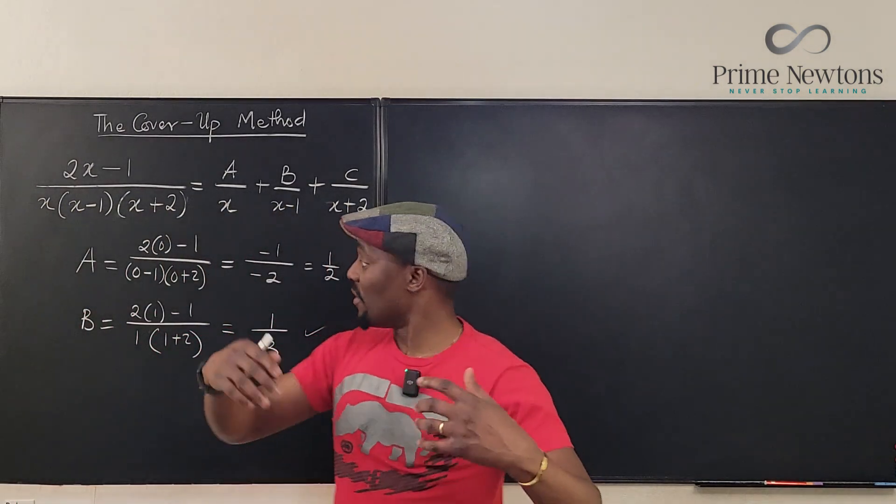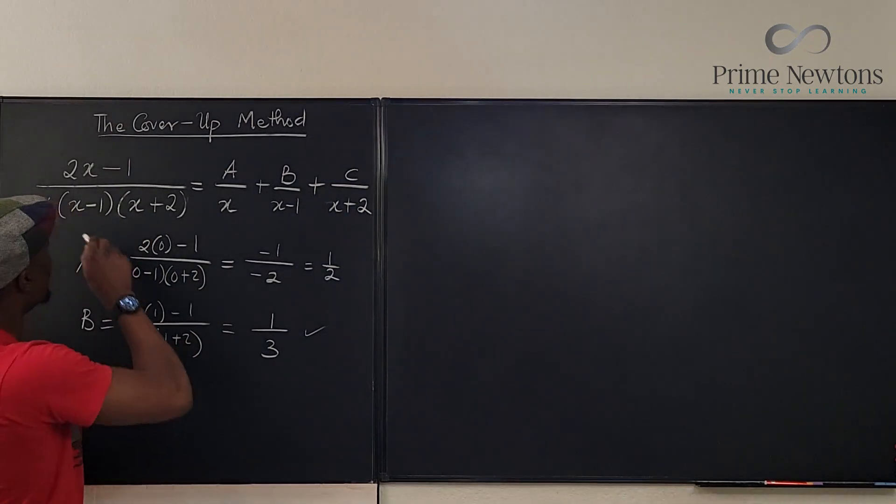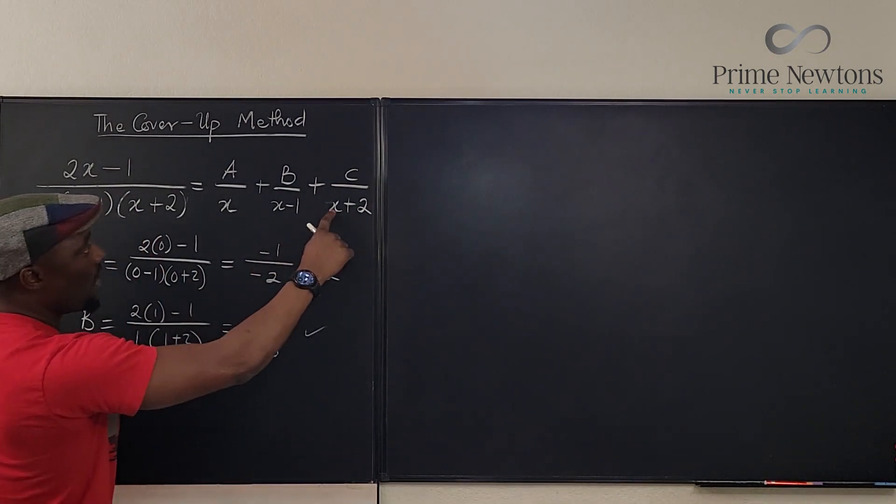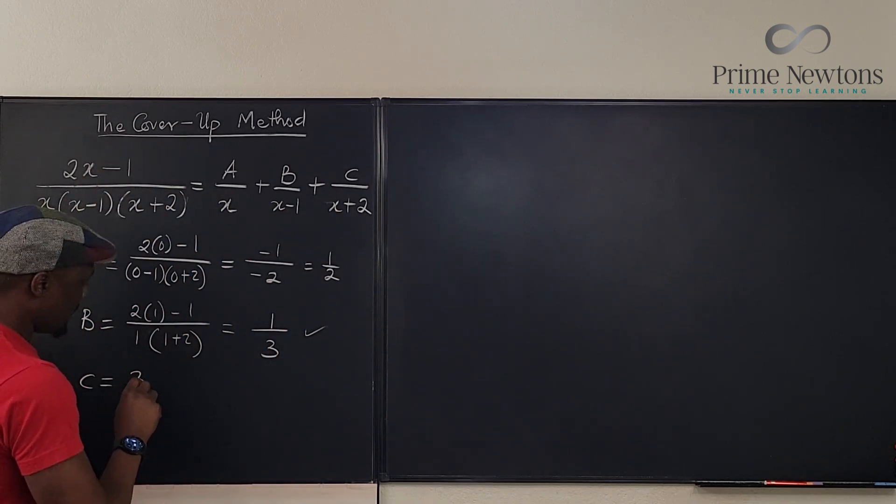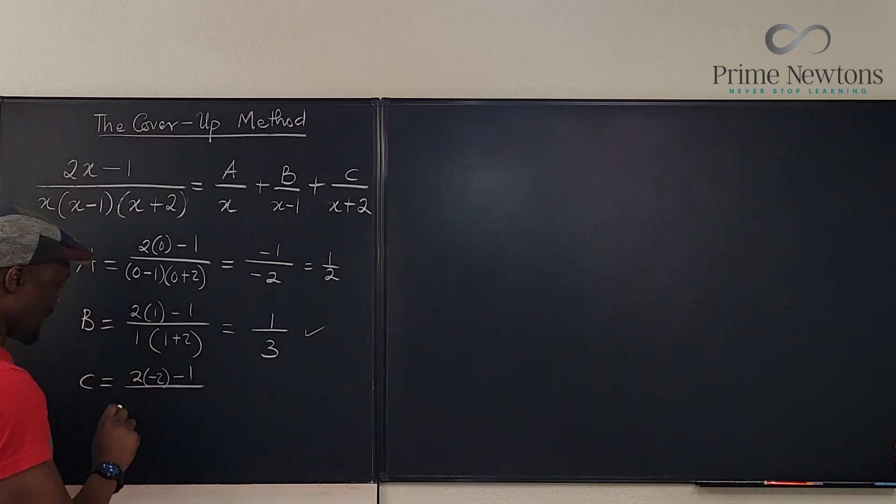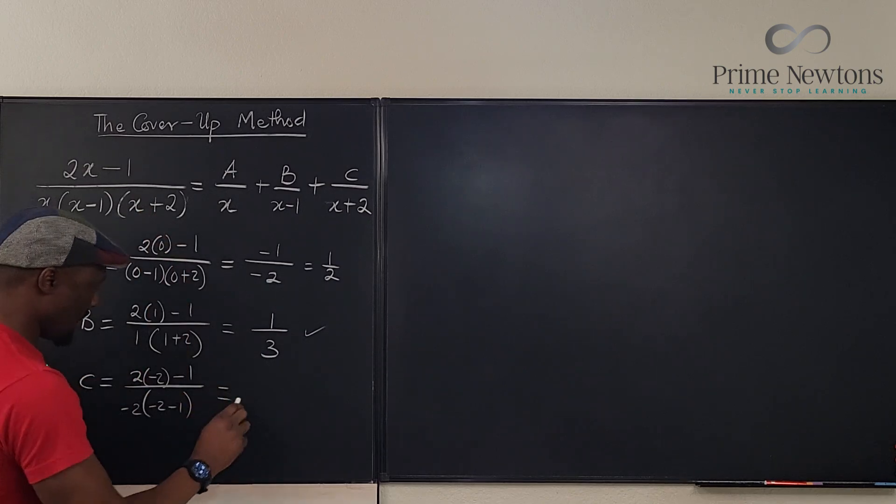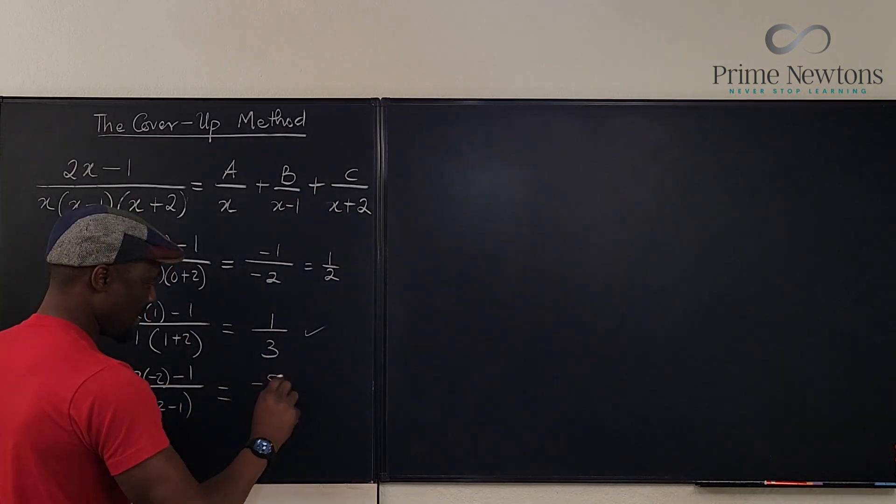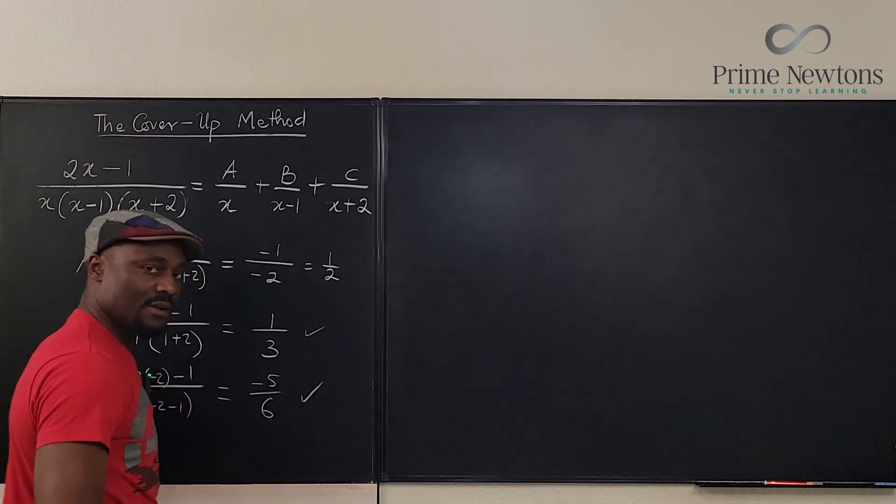Okay now do the same thing for C. C is going to be equal to we don't want negative 2 so we're gonna go here and say it's gonna be 2 times negative 2 minus 1 over this is going to be negative 2 times negative 2 minus 1. We ignore this one. Well what do we get here? We get negative 5 over this is 6 and that's our answer.